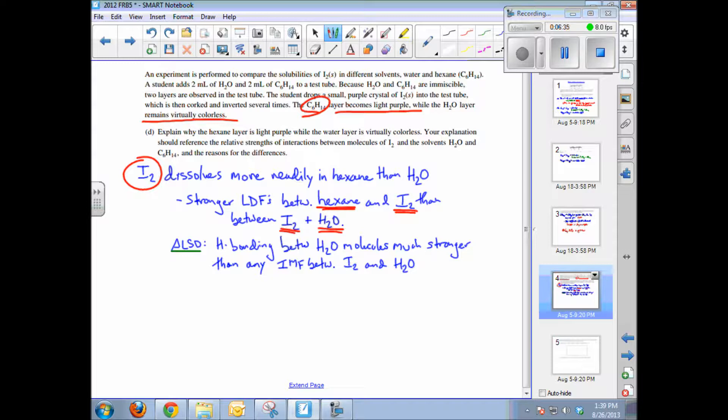Hydrogen bonding between water molecules is very strong, and any IMF, intermolecular force, between iodine molecules and water will be much weaker and unable to break those attractive forces. So iodine won't dissolve into water, but it will dissolve into nonpolar hexane because there are pretty strong London dispersion forces in iodine, such a large molecule with many, many electrons.